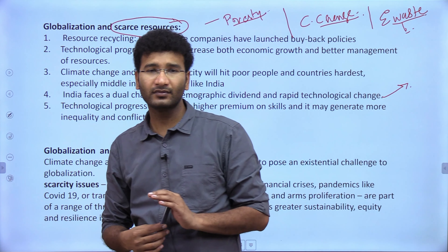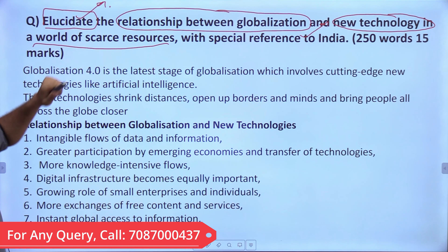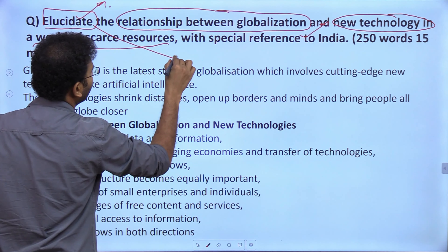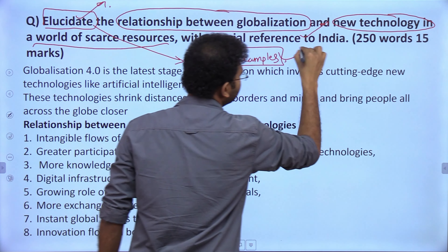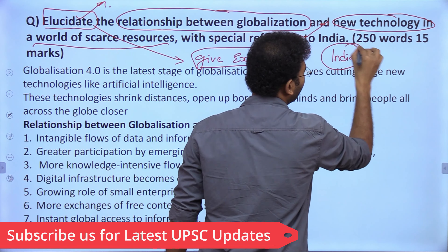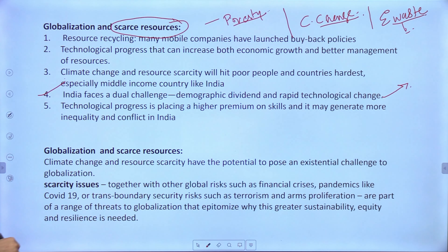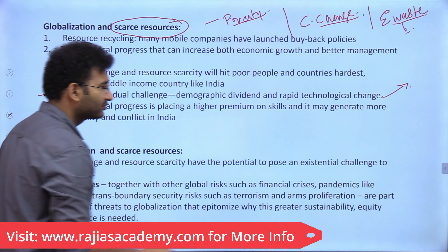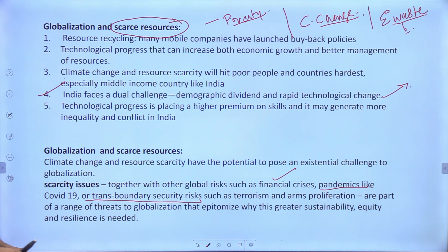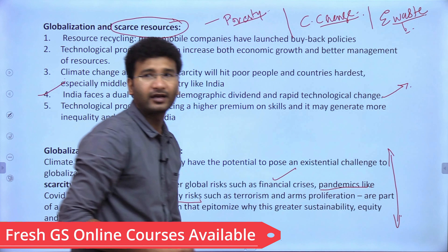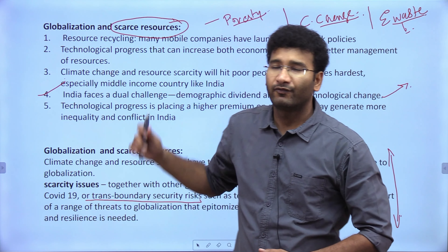When elucidating globalization and new technologies, you must give examples. For India specifically, cite: the demographic challenge, financial crises, pandemics, and transboundary security issues like terrorism as problems that globalization and technology need to address. Relate globalization to new technologies by linking with poverty, climate change, and e-waste. These are the geography questions from the 2022 mains paper — the PDF is available on the Raj Malhotra IAS Telegram channel.